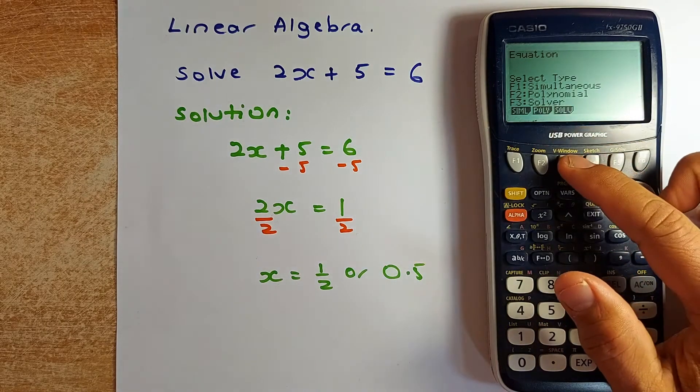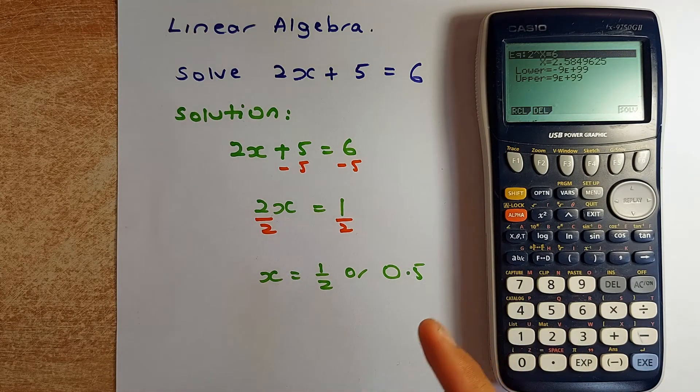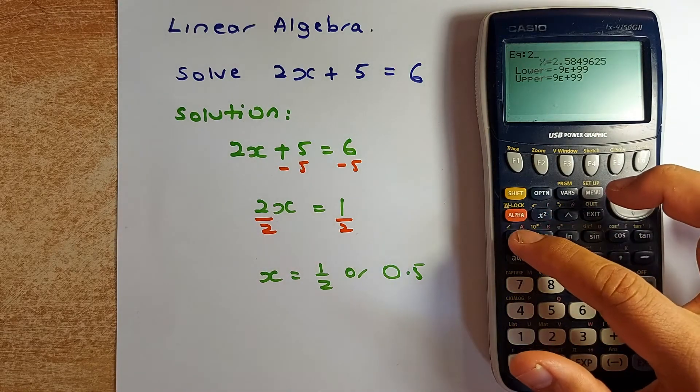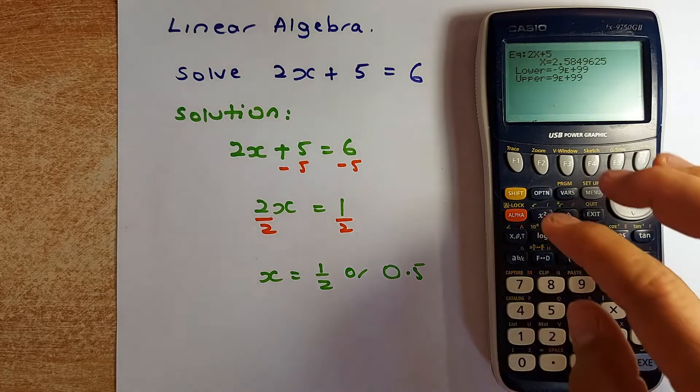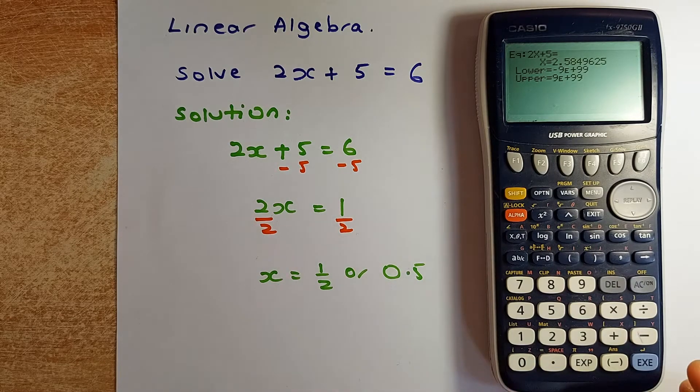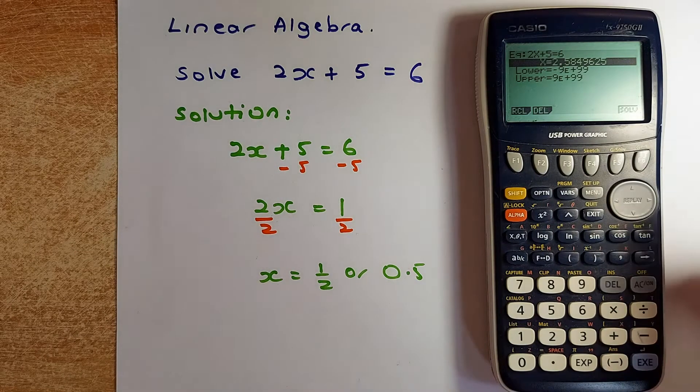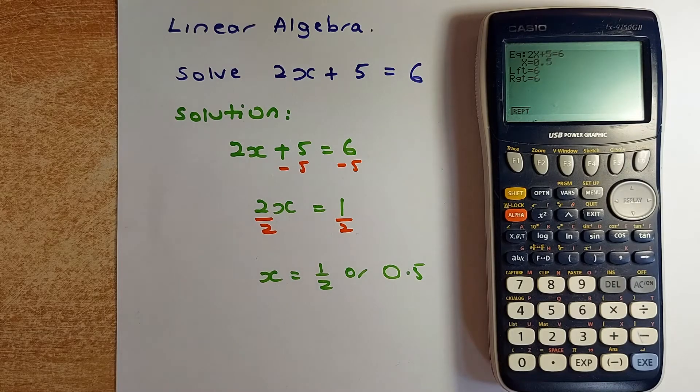So you are going to press F3 on solver and then you are going to put the equation. The equation is 2x plus 5 equal to 6. So what happens is that you are going to put 2, the x button is just below the red button, the alpha button. So 2x plus 5. And the most important thing is the equal sign. The equal sign is actually here. You have to put shift dot or shift decimal point. It is the equal sign, the yellow button. And you put equal to 6 and you execute it. That is not the answer.